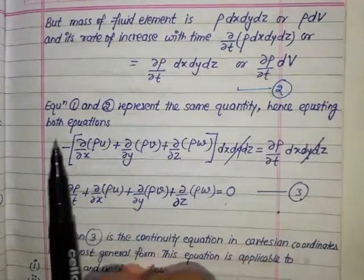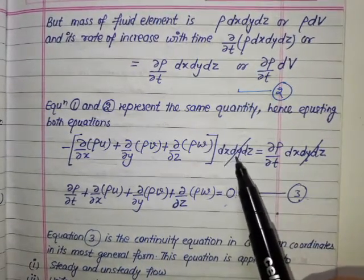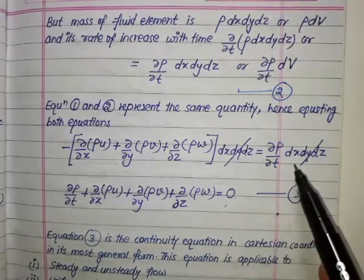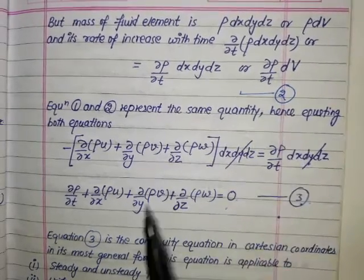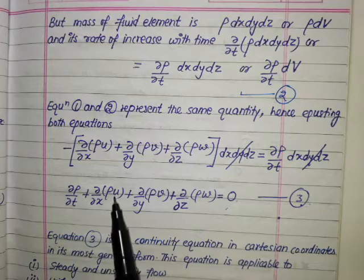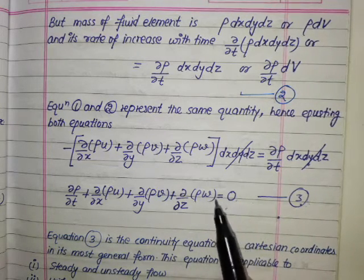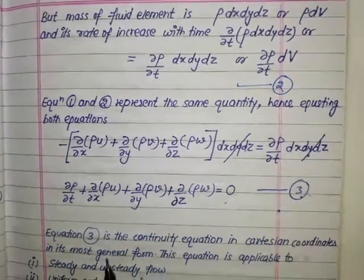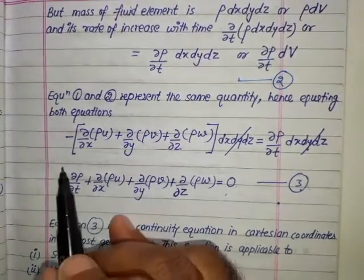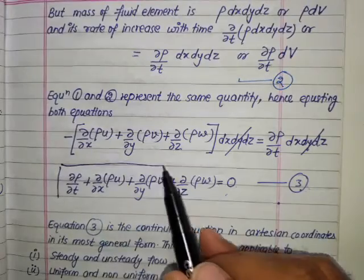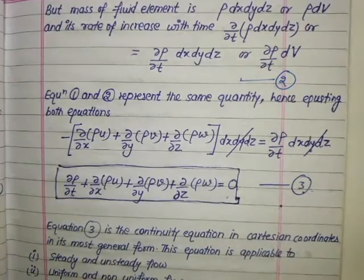Equating equation 1 and equation 2, and cancelling the common factor dx·dy·dz, we obtain: ∂ρ/∂t + ∂(ρu)/∂x + ∂(ρv)/∂y + ∂(ρw)/∂z = 0. This is equation 3 — the continuity equation in Cartesian coordinates in x, y, and z directions.